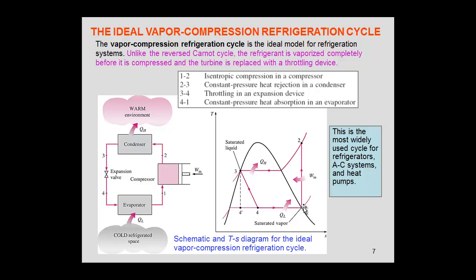We start with a saturated vapor, we compress it with an isentropic compressor, then we have heat rejection. This portion is not isothermal; this portion is isothermal until we get saturated liquid, and then we expand it.